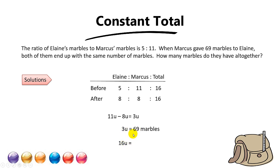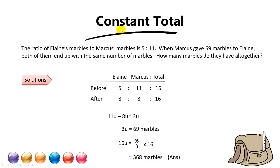To find 16 units — because the question asks for the marbles altogether — you take 23 times 16, and the answer is 368 marbles. So when you see questions involving internal transfer, the concept tested will usually be Constant Total.